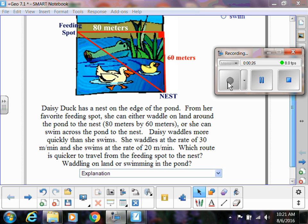Now here's the deal. Daisy waddles more quickly than she swims. She waddles at the rate of 30 meters per minute, and she swims at the rate of 20 meters per minute. So the question is, which route is quicker to travel to her favorite feeding spot? So should she waddle on the land or swim in the pond?